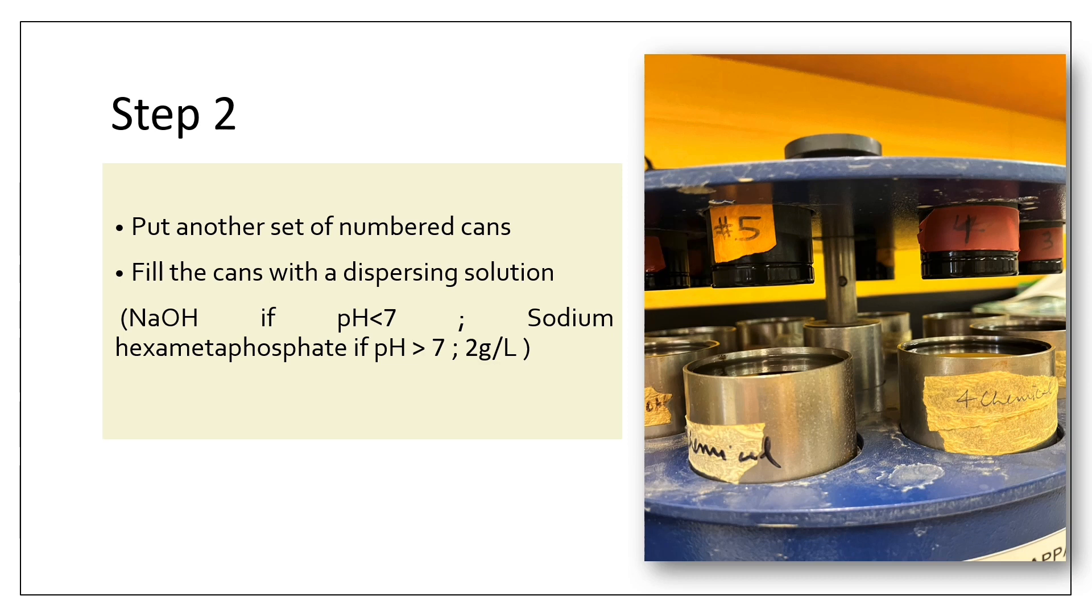For this, you should know the pH of your soil. If the pH of the soil is less than 7, sodium hydroxide should be used, and if it is greater than 7, sodium hexametaphosphate should be used at the rate of 2 grams per liter of water. In my case, the pH of the soil was less than 7, so I simply used NaOH at the rate of 2 grams per liter of water.